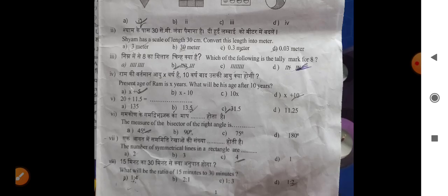The present age of Ram is X years. What will be his age after 10 years? 20 plus 11.5. What will be the measure of the bisector of the right angle?